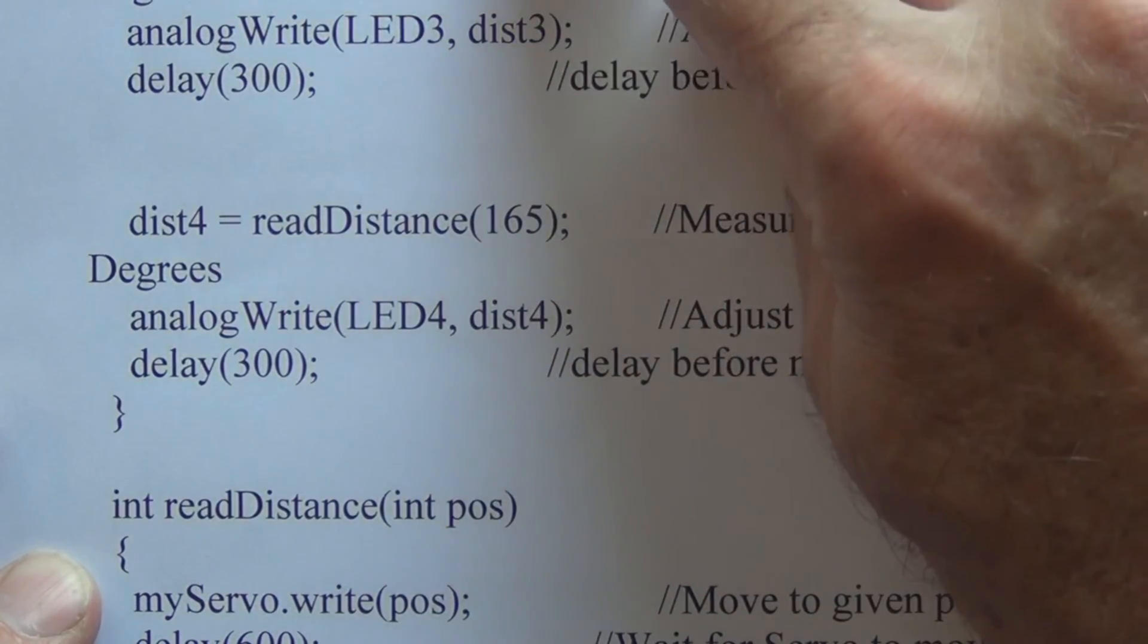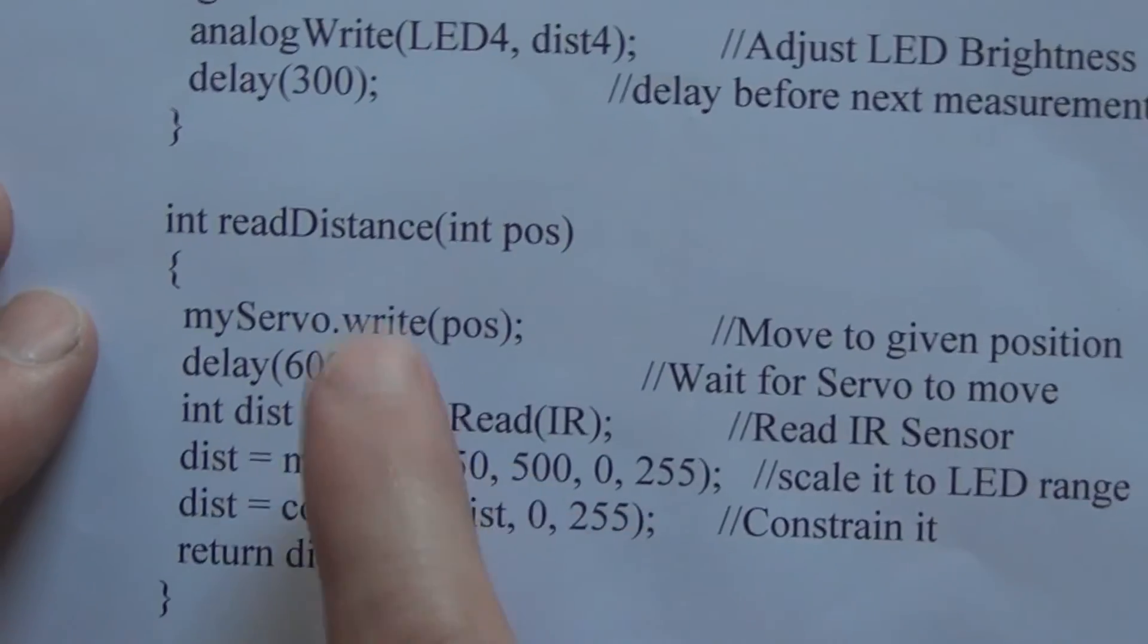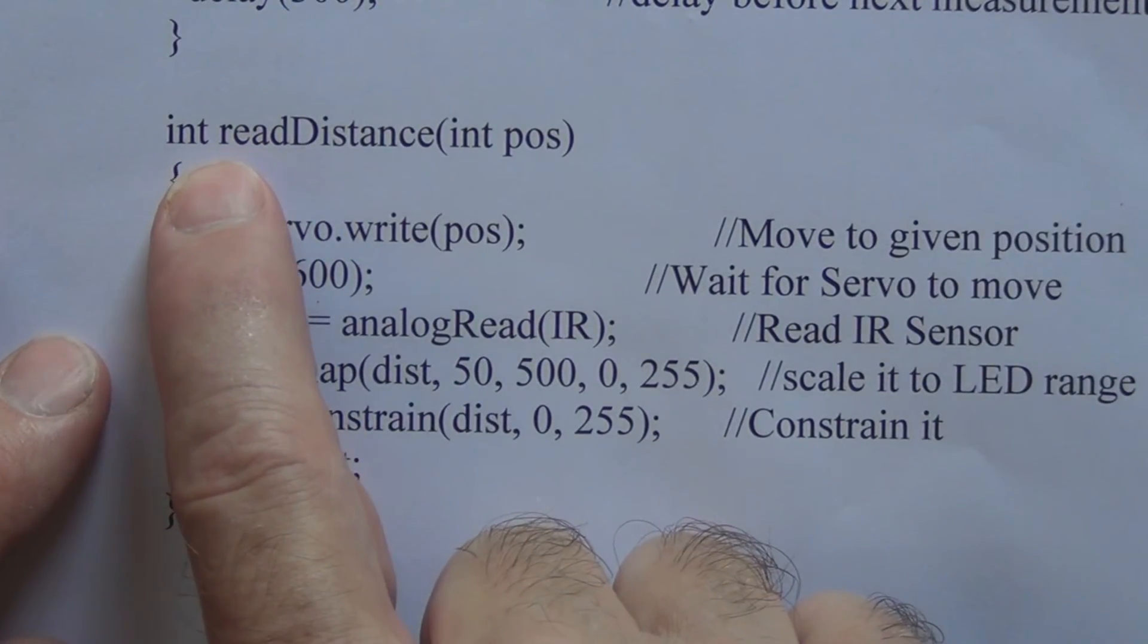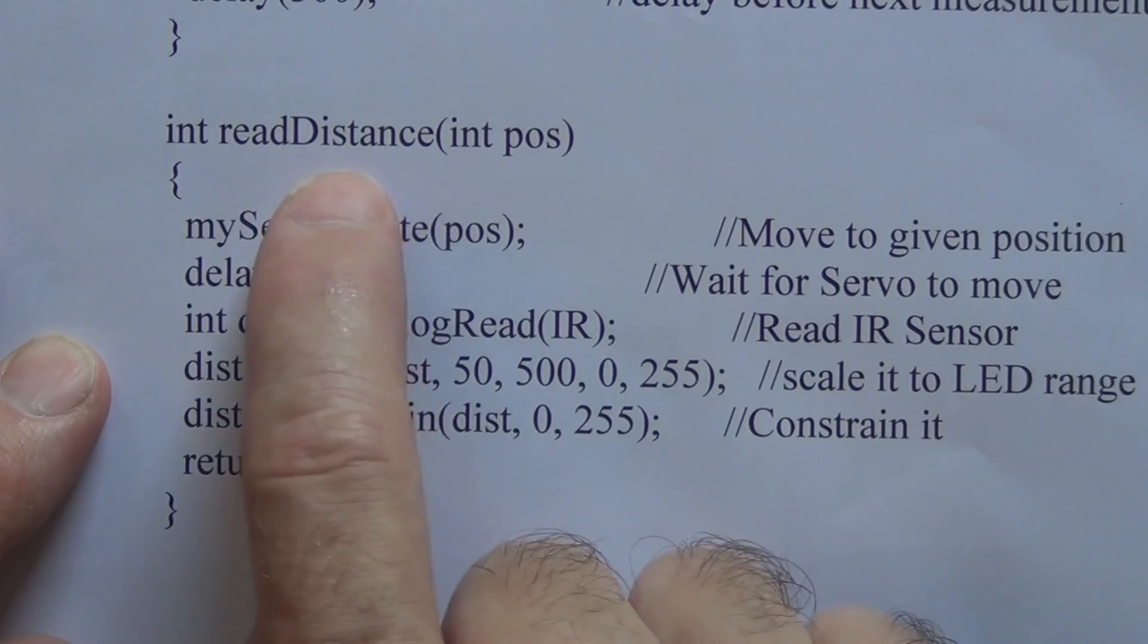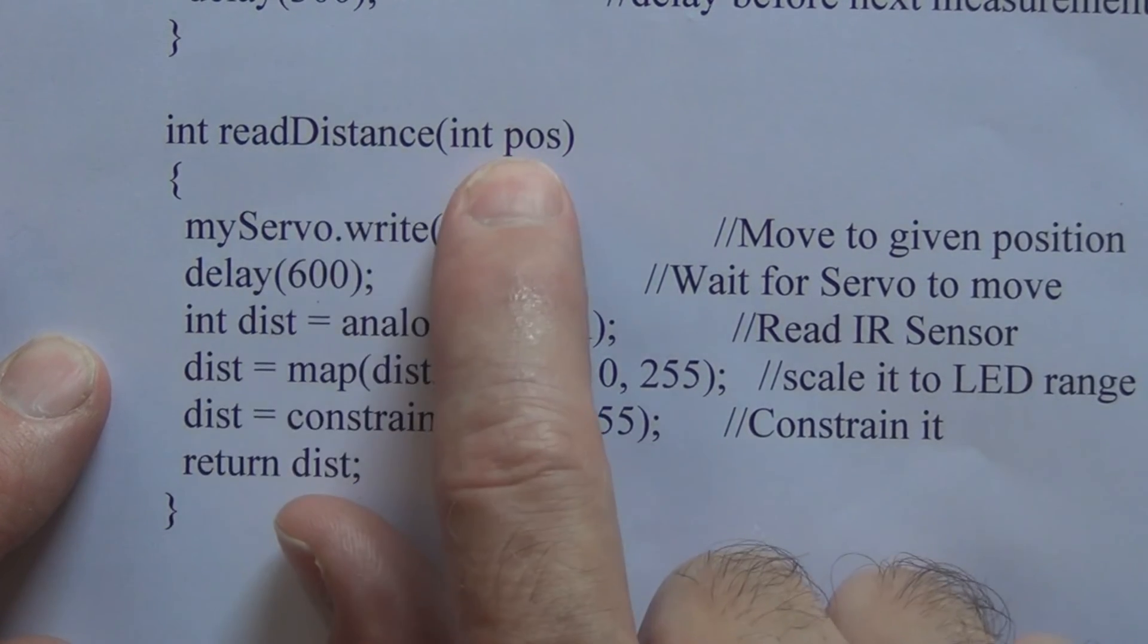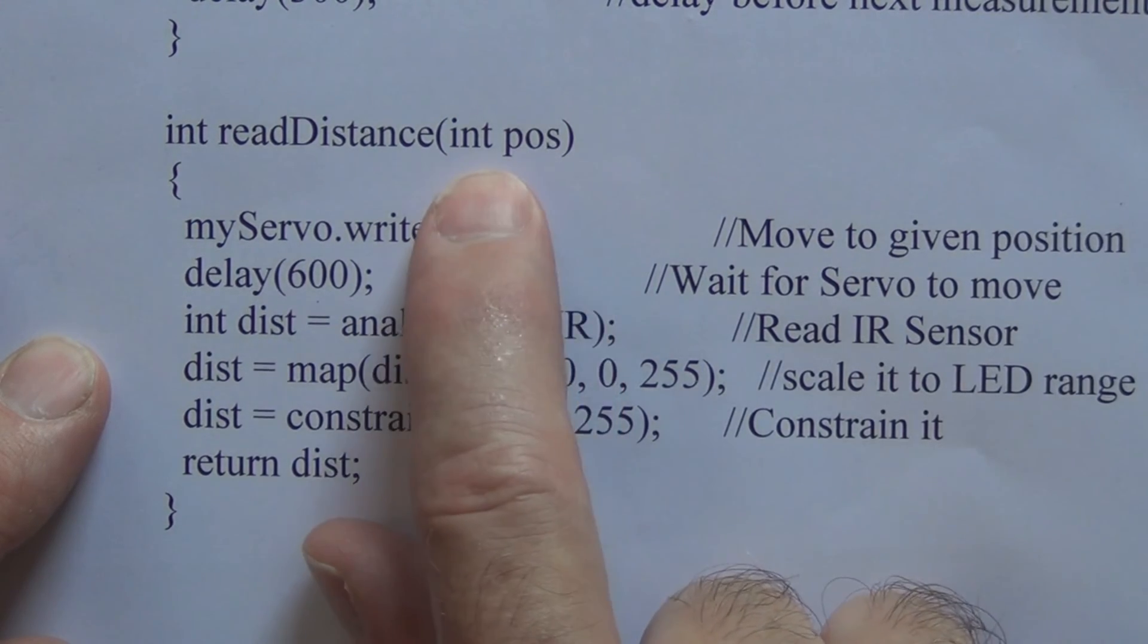15, 65, 115, and 165. And then at the end here, all at once we are declaring readDistance, whatever that value is being returned there, as an integer, and position as an integer.